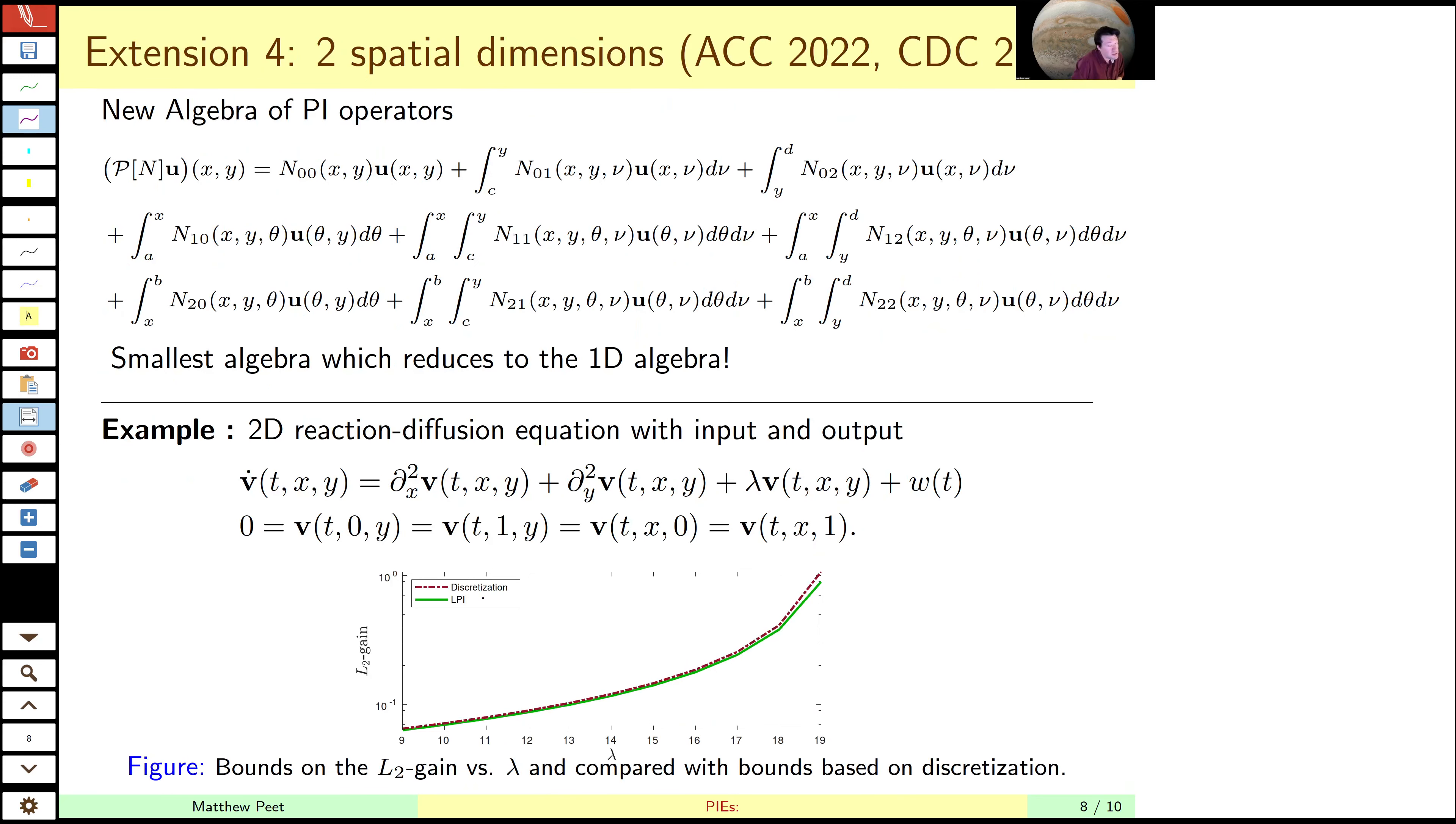The next extension is to two spatial dimensions. This is the case where you want to couple your actuator with fluid flow, for example. In this case, however, we have to extend our algebra. Remember, algebra is the heart of everything we do here. And the simplest extension to two dimensions which includes the algebra for 1D requires nine parameters. Eight kernels and one multiplier.